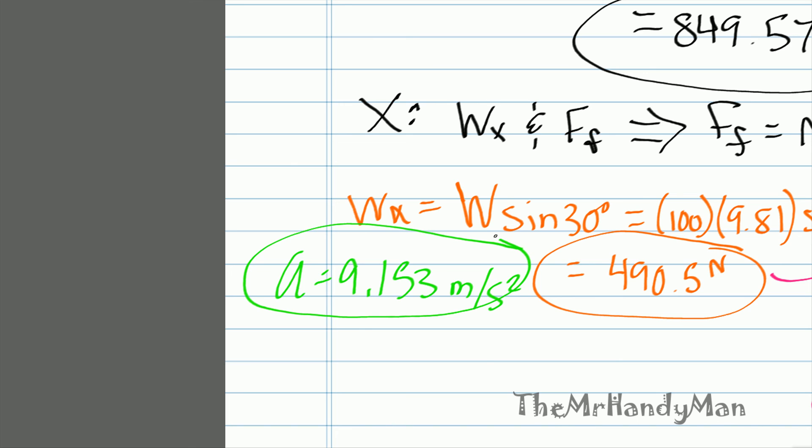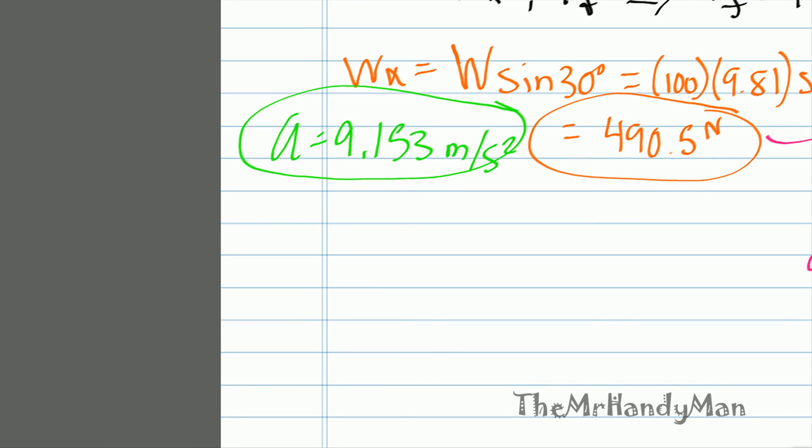Now, we can just use the simple kinematic equations. If we use them, v2 equals v1 minus, just because it's resisting the motion, a times t. We know that v2 is going to equal zero because we're waiting for it to stop.